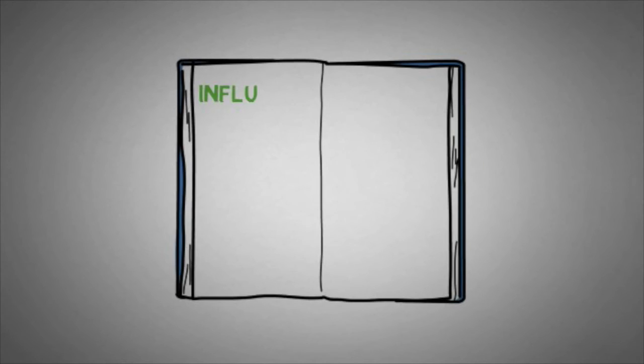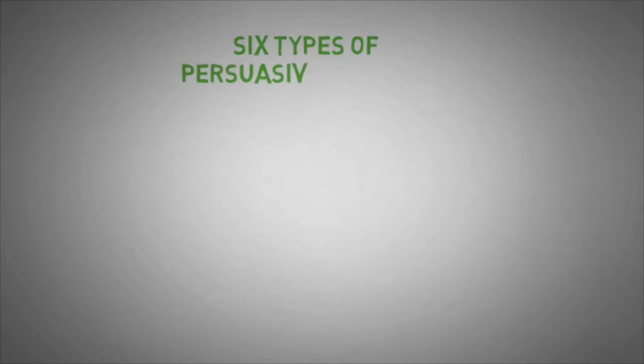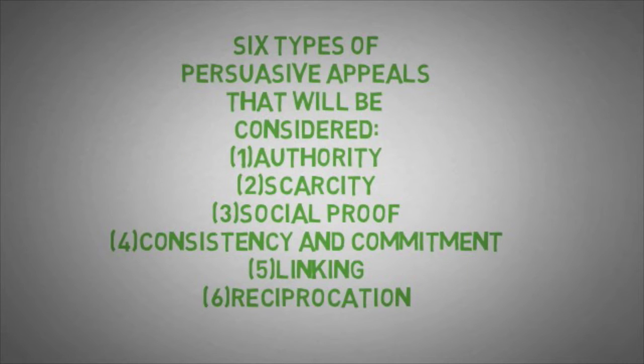The book Influence by Robert Cialdini will be discussed in this video. In the book, there are six types of persuasive appeals: authority, scarcity, social proof, consistency and commitment, linking, and reciprocation. Imagine there's this person wanting to Netflix and chill with.